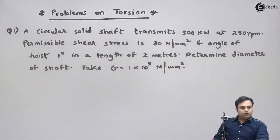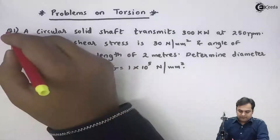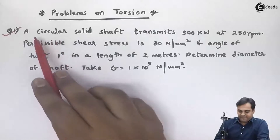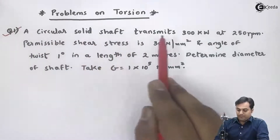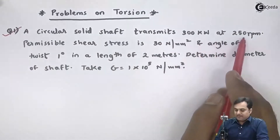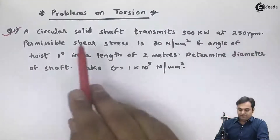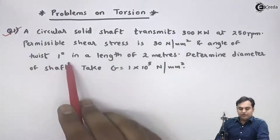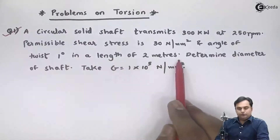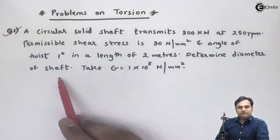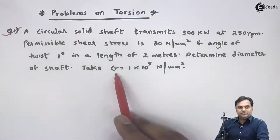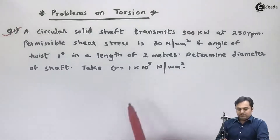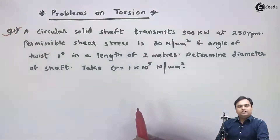Let us solve some problems on torsion. Here is the first question: a circular solid steel shaft transmits 300 kilowatts at 250 rpm. The permissible shear stress is 30 newton per mm square and angle of twist is one degree in a length of two meters. Determine the diameter of the shaft. Take G, that is modulus of rigidity, equal to 1 into 10 raised to 5 newton per mm square.